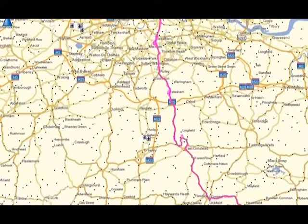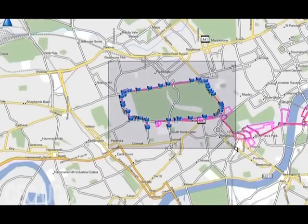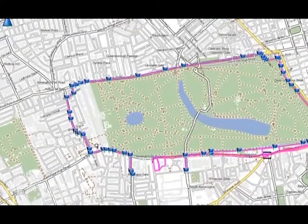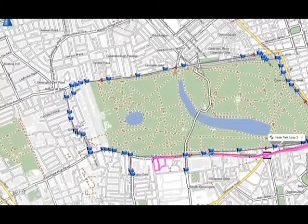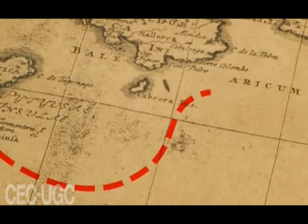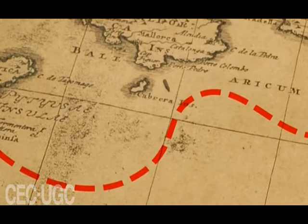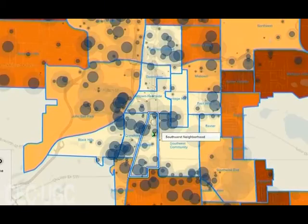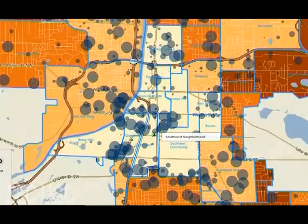Point symbols can take the form of dots, circles, letters, icons, and pie graphs, and represent the locations of features or depict relative magnitude. Line symbols take the form of lines, dot strings, double lines, contours, and hatched lines, and represent linear elements such as roads and streams.